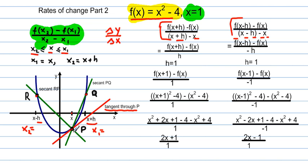Look at the graph: between P and Q there is one secant, and between P and R another secant, but there is only one tangent at point P. Point Q gets closer and closer to point P, and so does point R, until eventually they collide with point P to form one straight line that makes contact with the curve — that line is called the tangent line. Regardless of which side you start from, you get the same result.